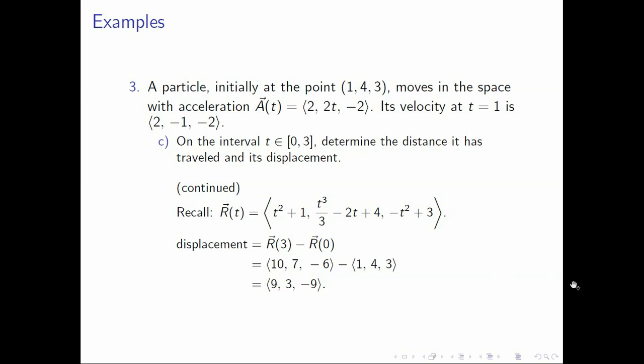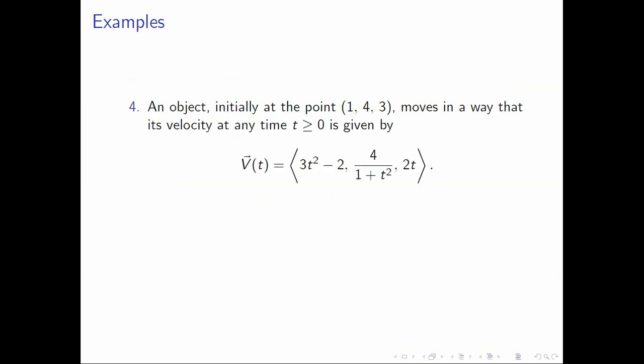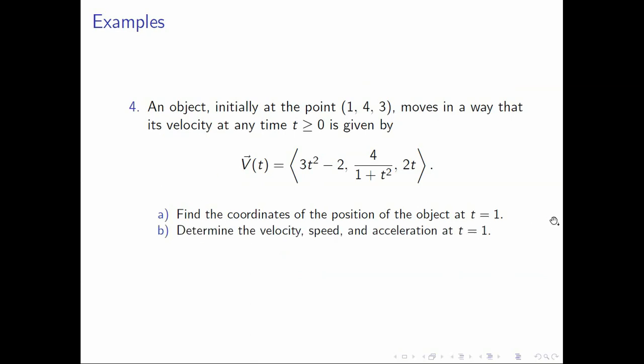This completes number 3. Let's move on to the last example. We have an object initially at the point (1,4,3) which moves so that its velocity at any non-negative time t is given by a vector-valued function. We need to find the coordinates of the position when t=1, determine the velocity, speed, and acceleration at t=1, and find the scalar tangential and normal components of acceleration at t=1. Pause the video and try this on your own.